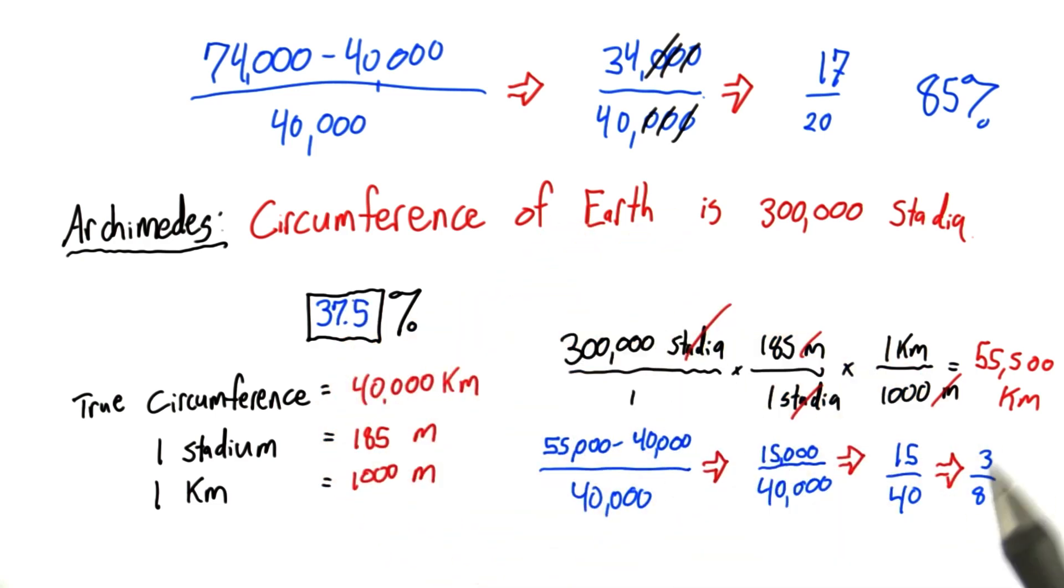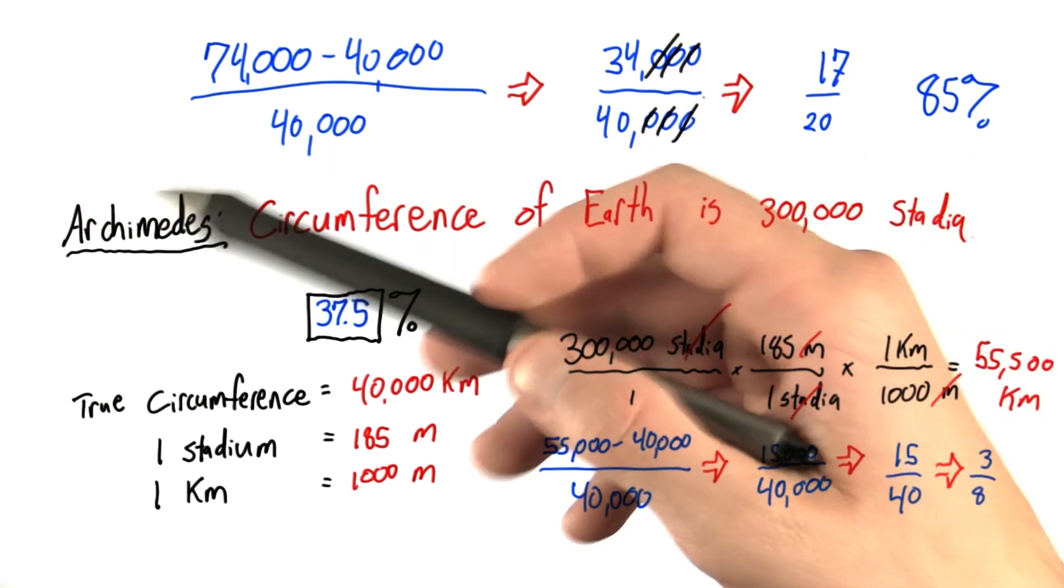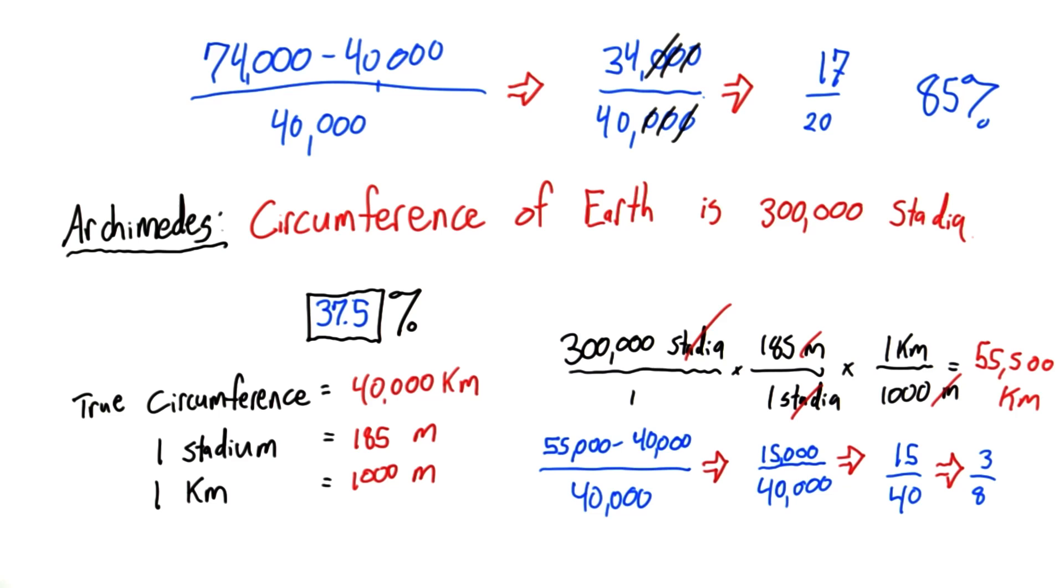So he was still closer than Plato, but quite a ways off. And since both Plato and Archimedes were just guessing, I don't know how either of them had any confidence that the numbers they made were correct.